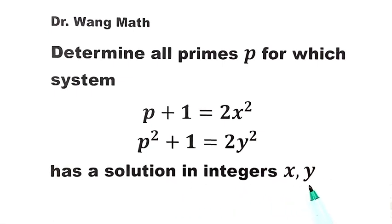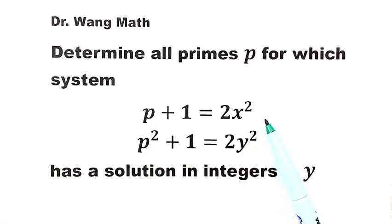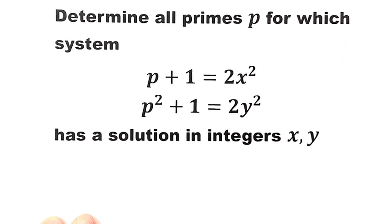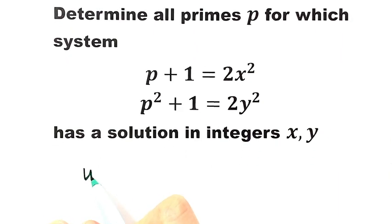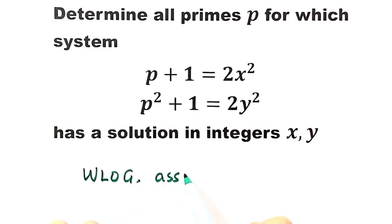How do we solve it? Because we are solving for p, it doesn't matter if x and y are positive or negative — x squared and y squared are always positive. So without loss of generality, we can assume both x and y are greater than or equal to zero.